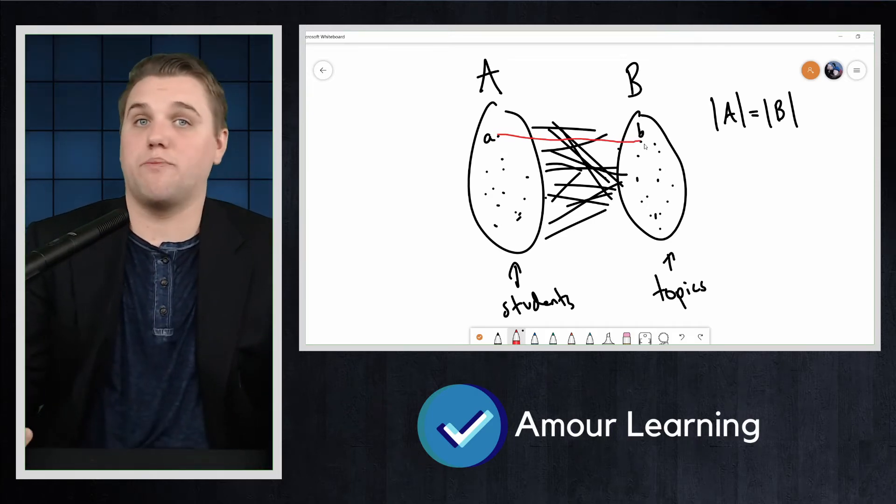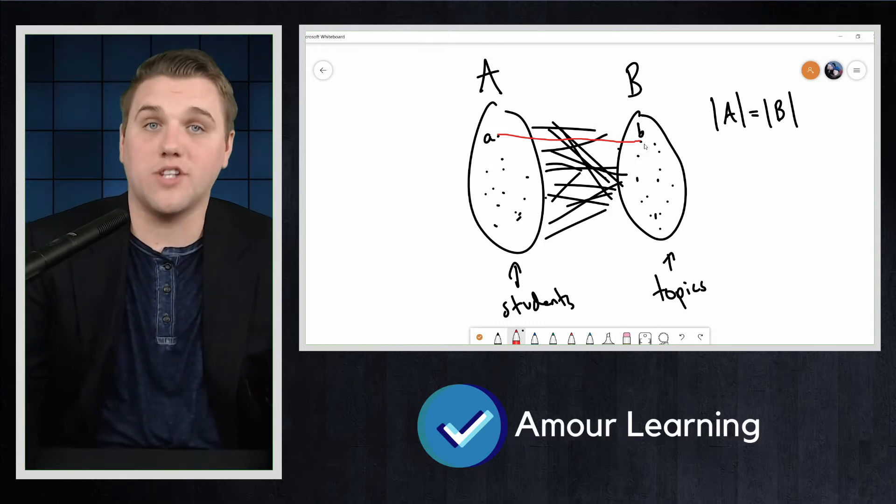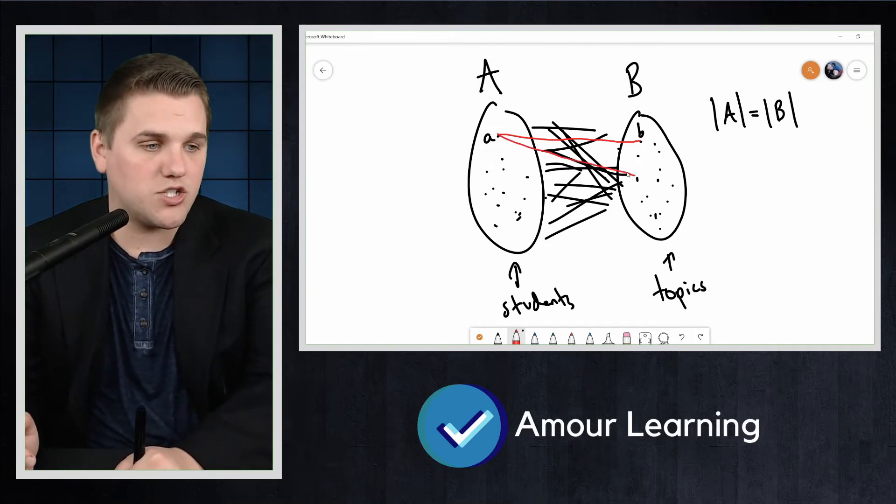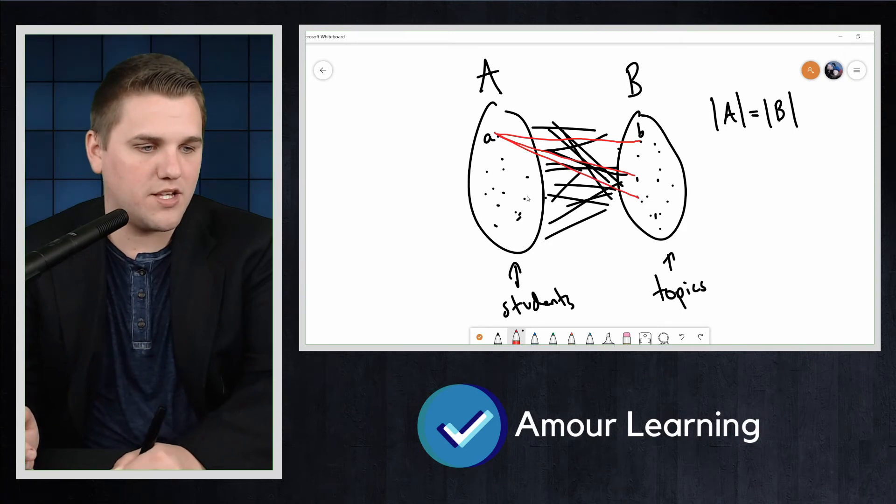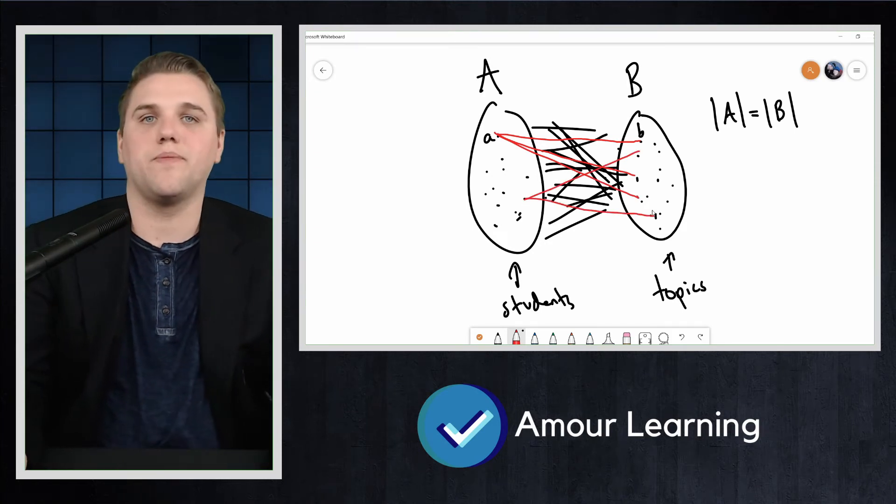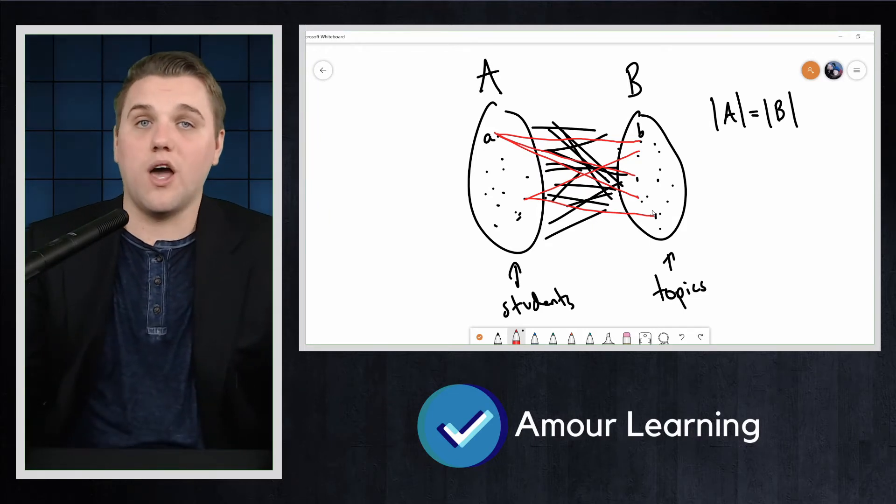Of course some students would want to present on more than one topic. Maybe A wants this topic, maybe A wants this topic as well or that topic. Maybe this student wants that topic and that topic. So their vertex would have a degree greater than one.